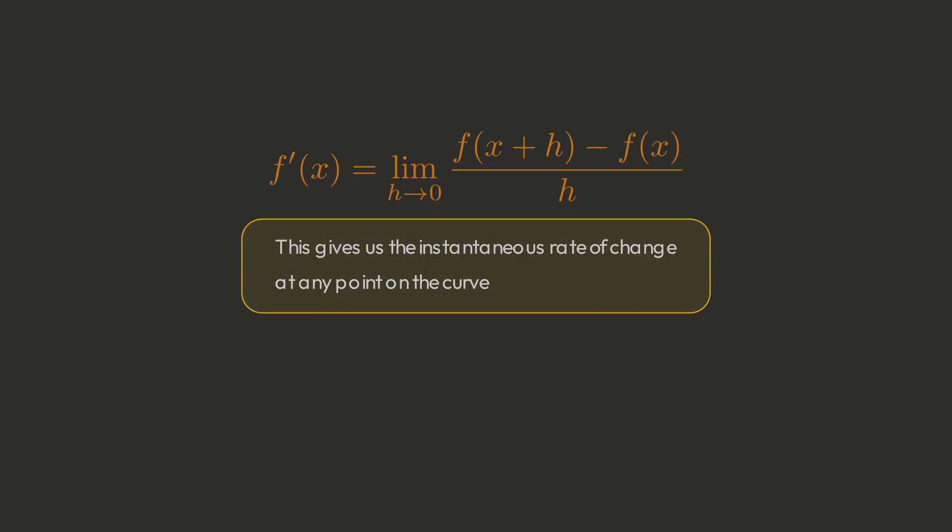Don't let the notation scare you. Let's see what this means using our parabola f of x equals x squared. Step one: f of x plus h equals x plus h, the whole thing squared, which expands to x squared plus 2xh plus h squared.